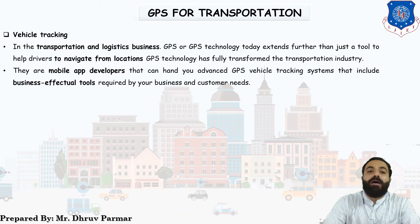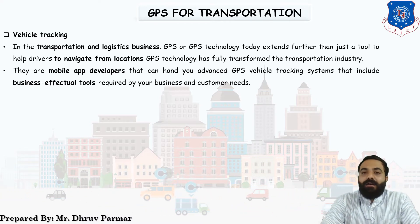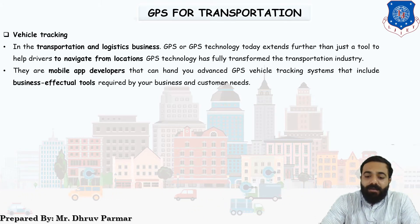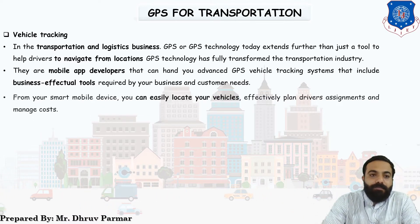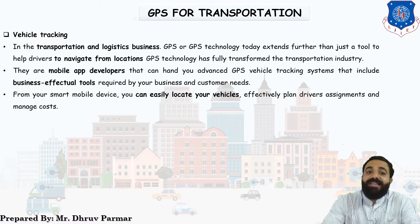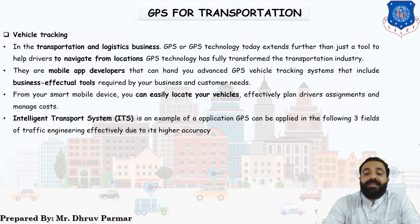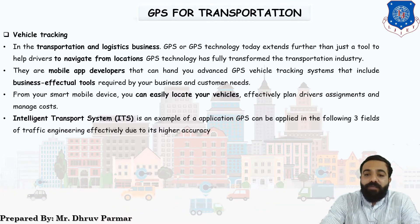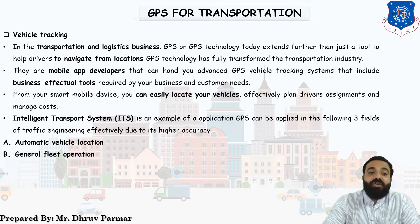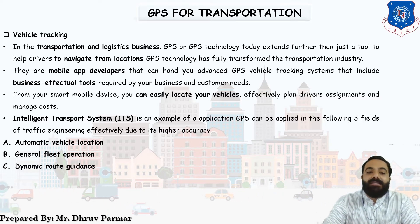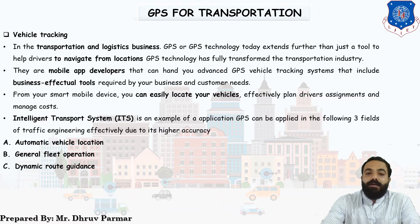Mobile app developers can provide advanced GPS vehicle tracking systems that include business tools required by your business and customer needs — like Amazon, Flipkart, and Zomato, where you can get the exact location of your product or food. ITS is an example of GPS applied across three types of fields: automatic vehicle location, general fleet operation, and dynamic route guidance — effective due to higher accuracy.